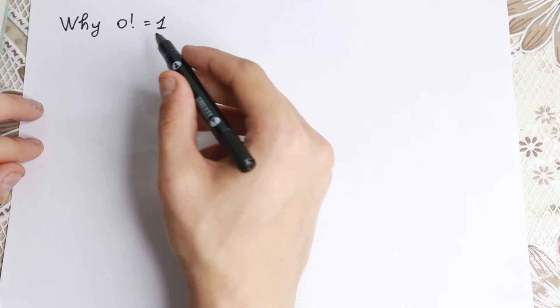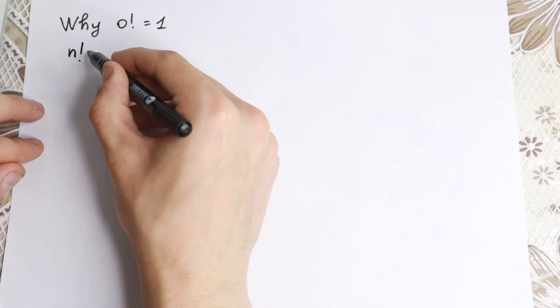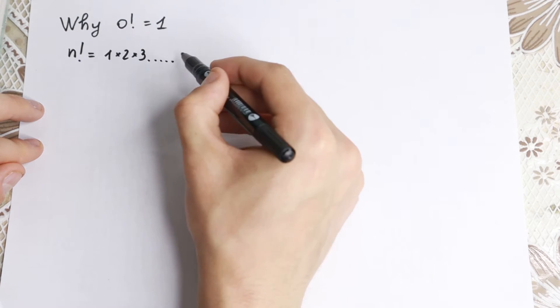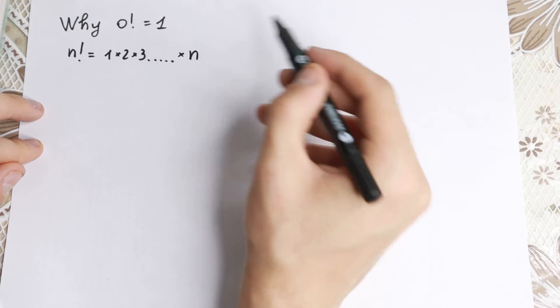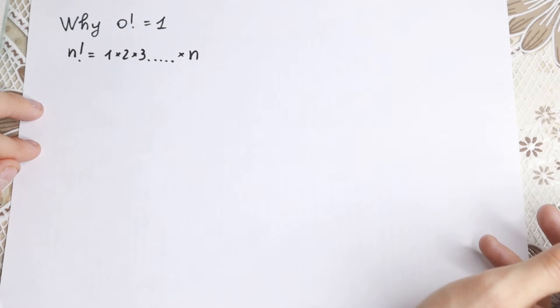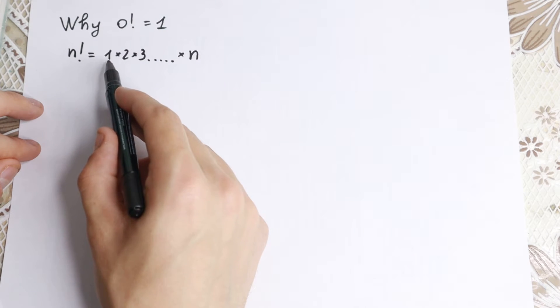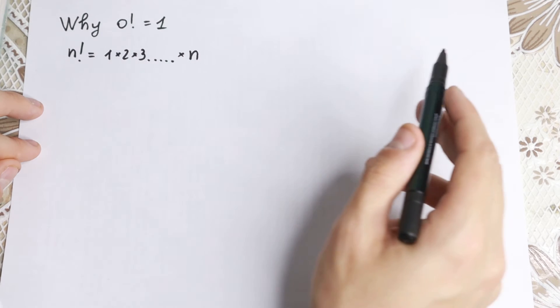Firstly we need to write a factorial formula. We have n factorial equal to 1 times 2 times 3, dots, times n in the end. So this is a classic formula, we all know this formula. We have our formula, a product from 1, 2, 3 until this n.